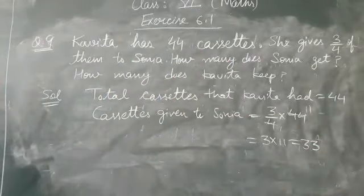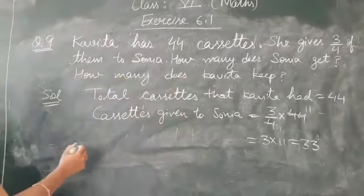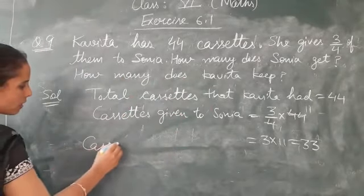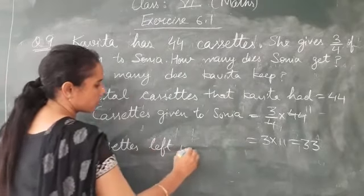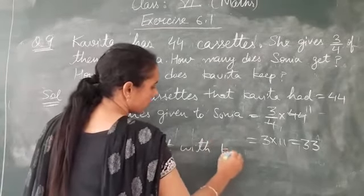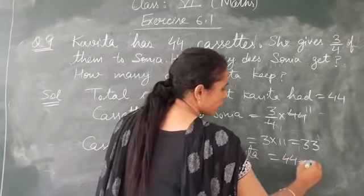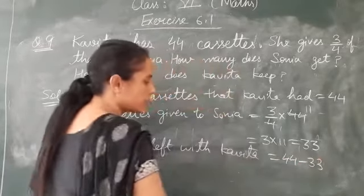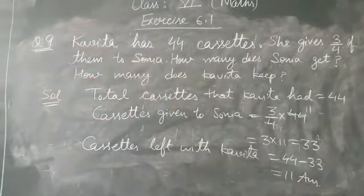It means she has given 33 cassettes to Sonia. Then how many are left with Kavita? Cassettes left with Kavita. Total she had 44, from it she has given 33, so it will be 11. 11 are left with Kavita.